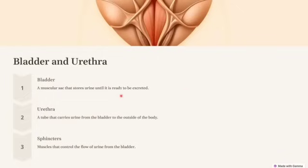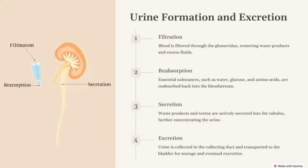The urethra is a tube that carries urine from the bladder to the outside of the body. The internal and external sphincters are muscles that control the flow of urine from the bladder. So to summarize: from the kidneys, urine travels through the ureter to the bladder; the urethra and sphincters play a role; brain stretch receptor signals are activated; and urine is voided — that is the step-by-step physiology of urine formation and voiding.